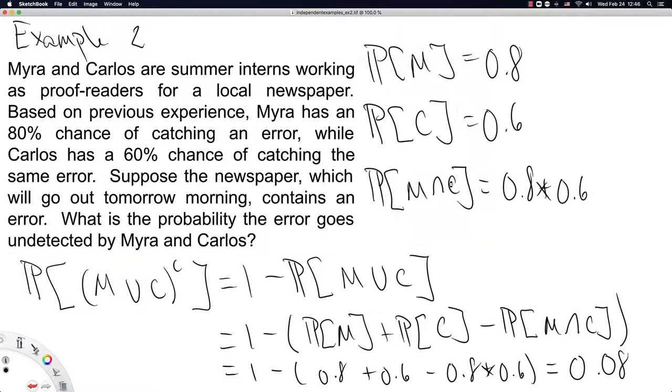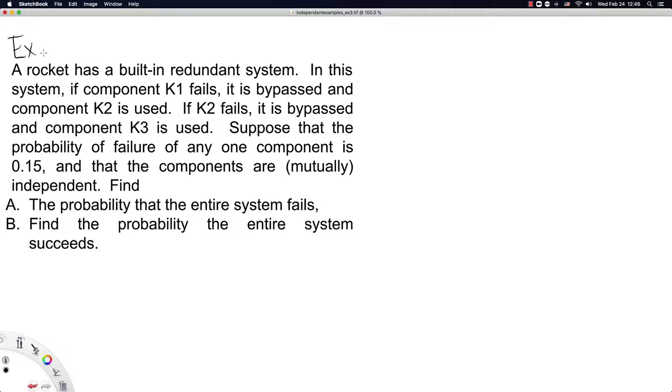Okay, let's try our third example. Example 3. A rocket has a built-in redundant system. You sure hope so if you're trying to get to the moon. In this system, if component K1 fails, it is bypassed and component K2 is used. If K2 fails, it is bypassed and component K3 is used. Oh, you know what? We could actually imagine that in quite a nice little picture. So let's say there's component K1, component K2, and component K3. Now theoretically, there's some input that these components are being fed from.